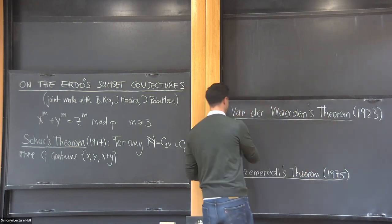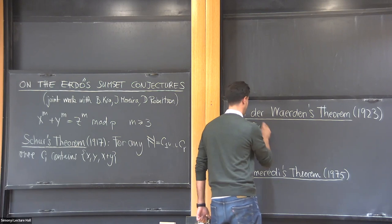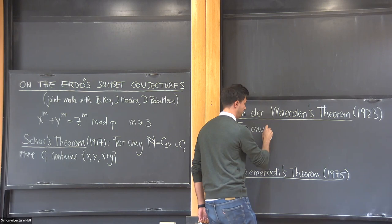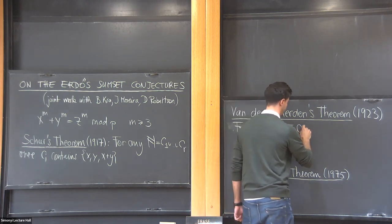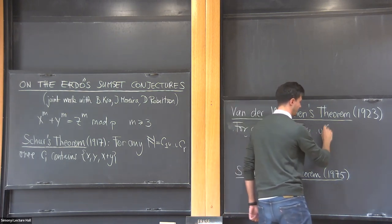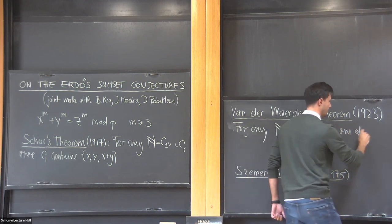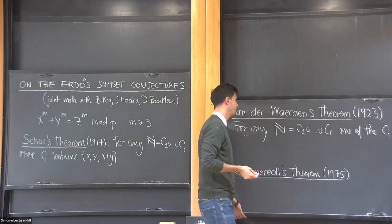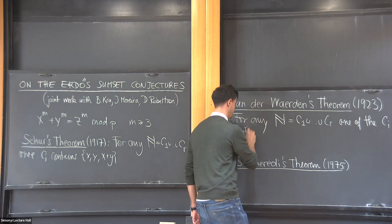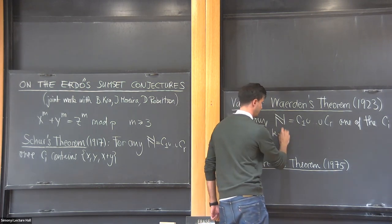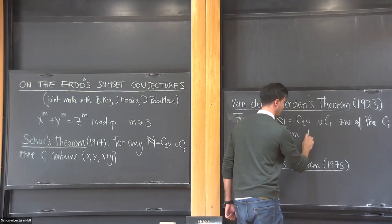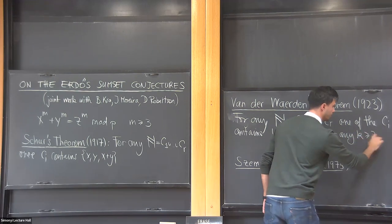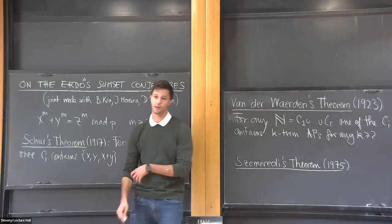For any finite coloring, one of the colors contains arbitrarily long arithmetic progressions. So it contains a k-term arithmetic progression for any k.